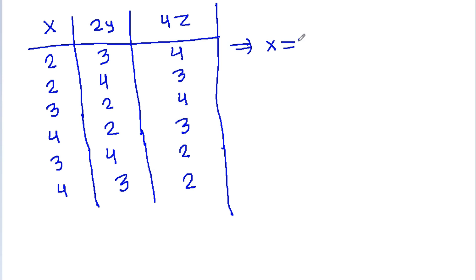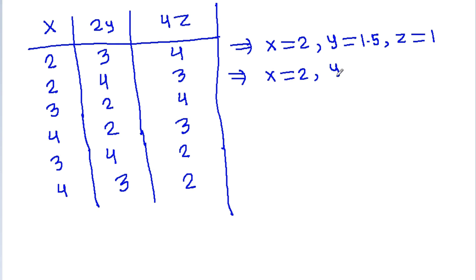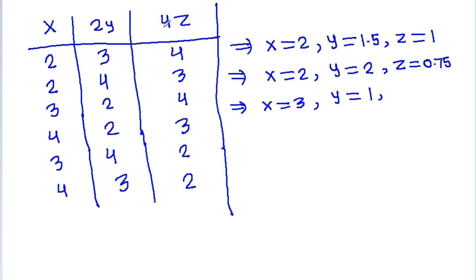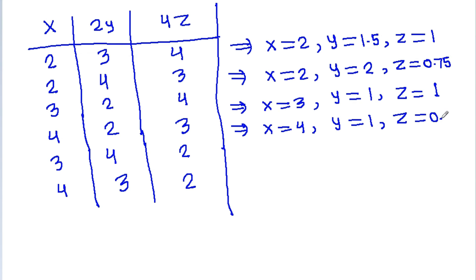Case 1: x=2, 2y=3 so y=1.5, 4z=4 so z=1. Case 2: x=2, 2y=4 so y=2, 4z=3 so z=0.75. Case 3: x=3, 2y=2 so y=1, 4z=4 so z=1. Case 4: x=3, 2y=4 so y=2, 4z=2 so z=0.5.